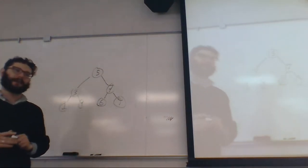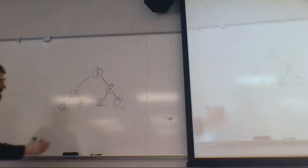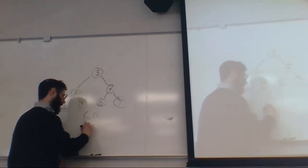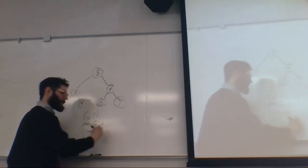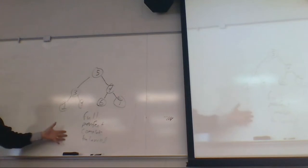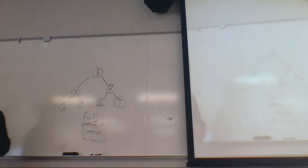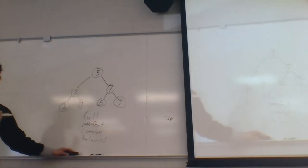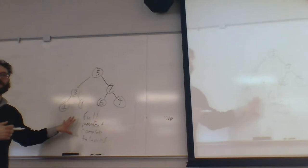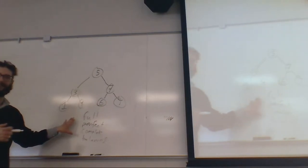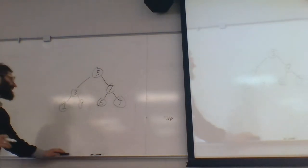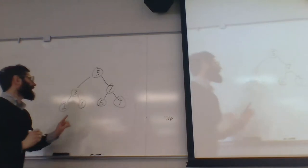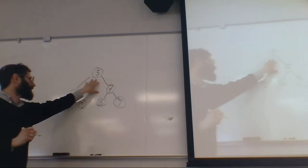If the tree is properly balanced — a definition we'll learn when we get back from break — we can describe trees as full, perfect, complete, and balanced. These are all mathematical qualities they can fulfill.